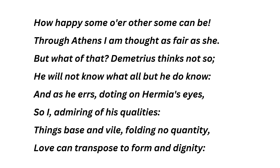Let's take everything we've learned and implement it on a piece of text - this one from Midsummer Night's Dream. Please note that you're going to hear the iambic very clearly in my voice. I'm not saying this is how it's supposed to be performed - more on that later. Here we go: 'How happy some o'er other some can be. Through Athens I am thought as fair as she. But what of that? Demetrius thinks not so. He will not know what all but he do know. And as he errs, doting on Hermia's eyes, so I, admiring of his qualities. Things base and vile, holding no quantity. Love can transpose to form and dignity.'